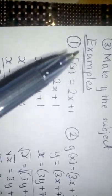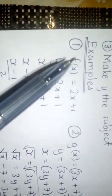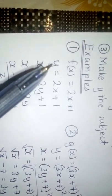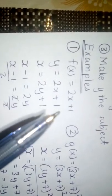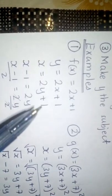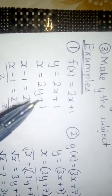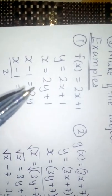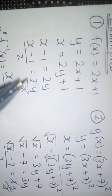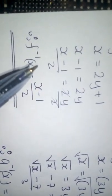Example one: f(x) = 2x + 1. Step one: remove f(x), keep y, so y = 2x + 1. Step two: exchange x and y, giving x = 2y + 1. Step three: make y the subject. On the side of y we have 2y + 1 — take 1 to the other side, it becomes minus: x − 1 = 2y. To remove 2 (which is multiplying), divide both sides by 2. Hence y = (x − 1)/2, so f⁻¹(x) = (x − 1)/2.